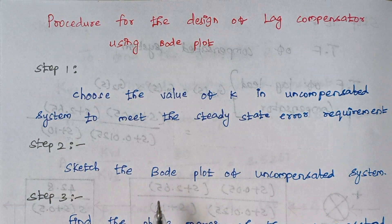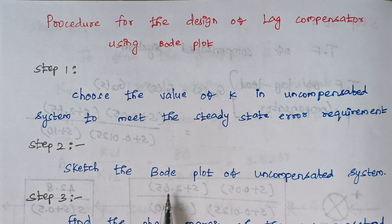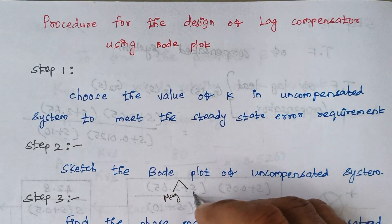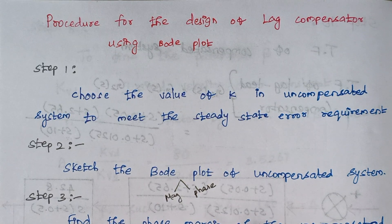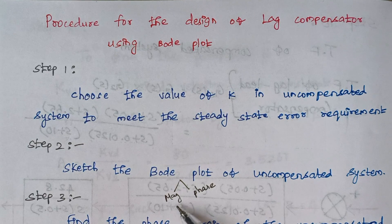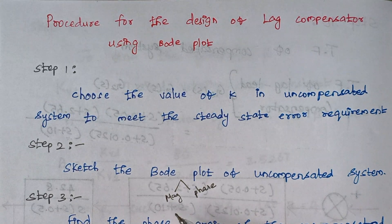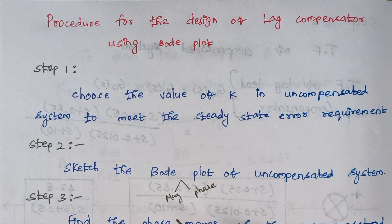Step 2 is to sketch the Bode plot of the uncompensated system. As we all know, the Bode plot has two plots: one is the magnitude plot and another is the phase angle plot. For the magnitude plot, we have to select two corner frequencies — omega L and omega H — apart from the corner frequencies obtained from the transfer function, and calculate the magnitude at each.